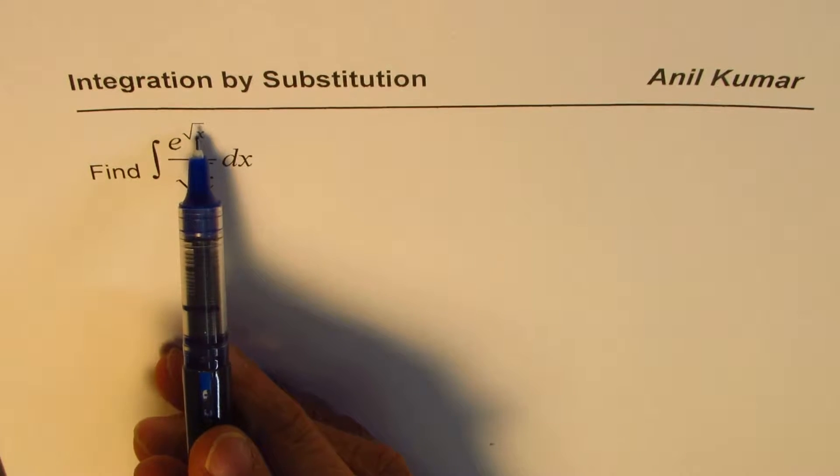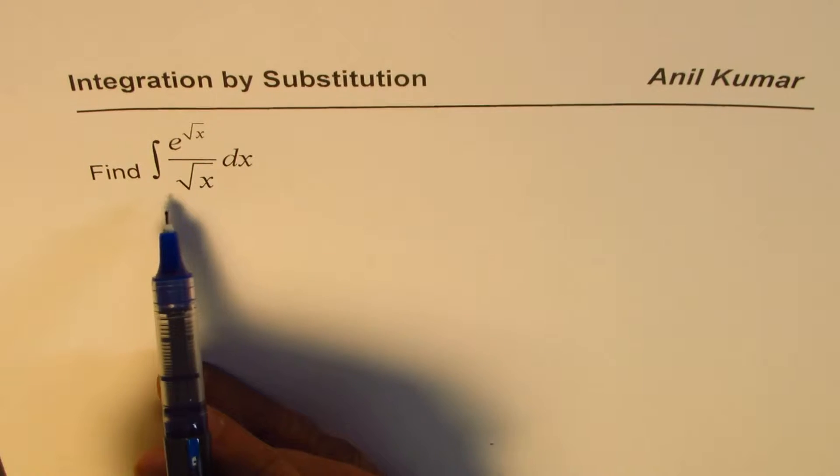That square root x derivative is 1 over square root x, with some number.